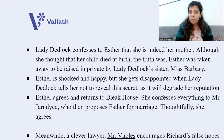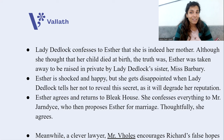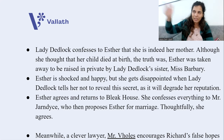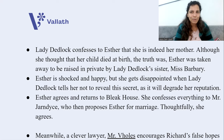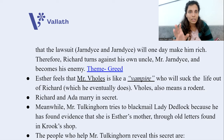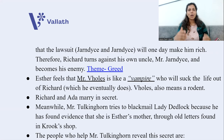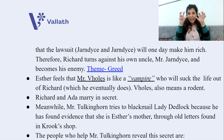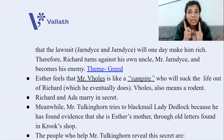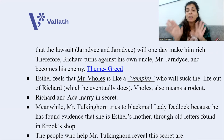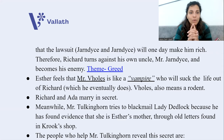At this moment, Mr. Jarndyce confesses his love to Esther and asks her to marry him. Esther loves Mr. Woodcourt, but Woodcourt is away traveling, so she thinks it over and agrees. Meanwhile, a clever lawyer named Mr. Vholes encourages Richard's false hopes that the Jarndyce and Jarndyce case will make him very rich, turning Richard against his uncle Mr. Jarndyce. The theme here is greed. Esther feels Vholes is like a vampire sucking the life out of Richard — and indeed Richard will die soon, losing all his money to the court case.